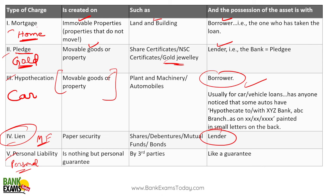A quick mnemonic to remember: mortgage = home loan; pledge = gold loan; hypothecation = car loan; lien = mutual fund loan; personal liability = personal loans. Very easy to understand — this is a shortcut technique.